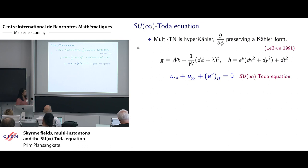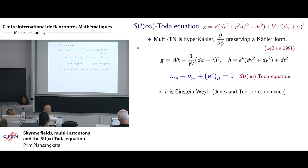Our aim here is to obtain some expression for the corresponding solution U to this multi-Taub-NUT metric. I forgot to mention that by the work of Jones and Tod, by the Jones-Tod correspondence, this metric is hyperkähler.